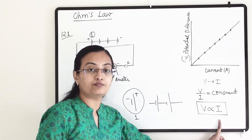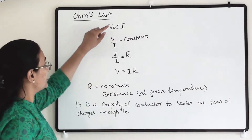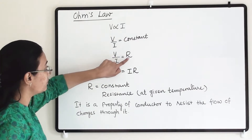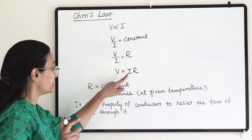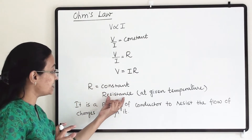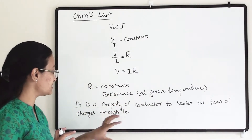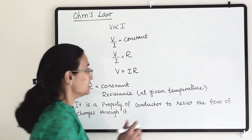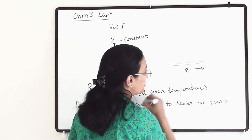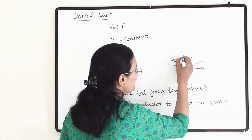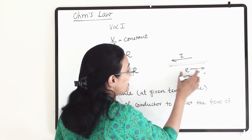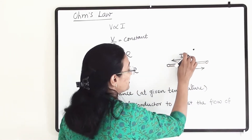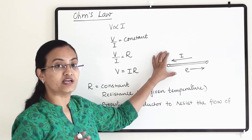So V is directly proportional to I, meaning potential difference is directly proportional to current. Since V is proportional to I, that also means V/I equals constant. Now V/I equals R, which we take as a constant, and R is resistance. R is constant and is the resistance at a given temperature. Resistance is a property of a conductor to resist the flow of charge through it — whenever electrons are moving in one direction, current flows in the opposite direction.